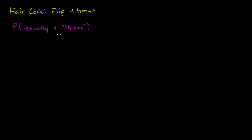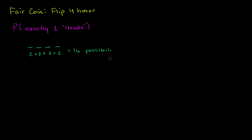To think about this, let's consider how many different possible ways we can get four flips of a coin. We have one flip, then another, then another, then another. The first flip has two possibilities — heads or tails — and so does each of the others. So you have 2 × 2 × 2 × 2, which equals 16 possible outcomes when you flip a coin four times.